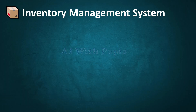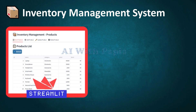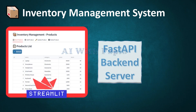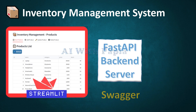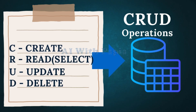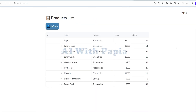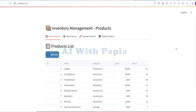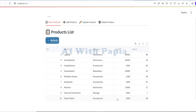Welcome back to my mini project inventory management system. Today we will see how to integrate all the components. Here is a brief layout: Streamlit as the frontend, Swagger FastAPI as the backend server, and MySQL as the database. We will see how they are interacting, and mainly in this project CRUD operations are being done.